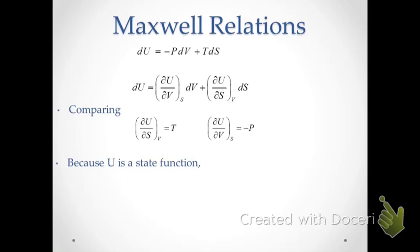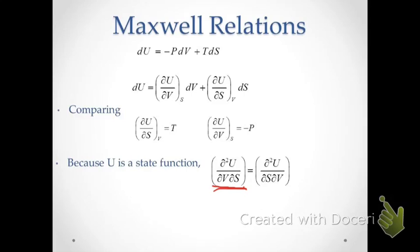Because internal energy is a function of state, it is independent of path. Mathematically, this means that when we take second derivatives, the order of differentiation is unimportant. For example, the second derivative with respect to entropy and volume — taking entropy first, then volume — equals the second derivative with respect to volume first, then entropy. This may seem like a trivial mathematical detail, but it's going to give us a relationship that will be critical for some future calculations.